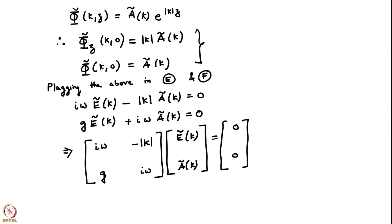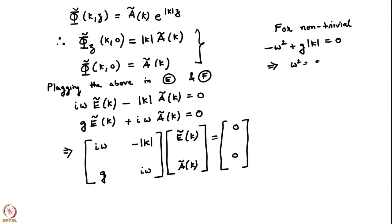For non-trivial solutions we set the determinant to zero: -ω² + g|k| = 0, so ω² = g|k|. The |k| will appear in the dispersion relation now onwards because when we write the final answer, ω = √(g|k|) and the integral limits include negative values of k. We have recovered the same dispersion relation as before.